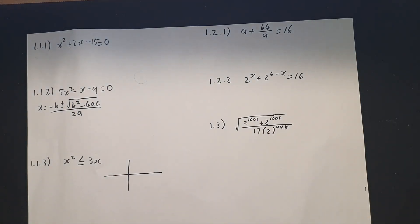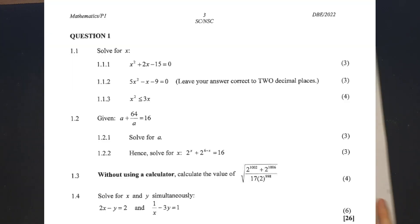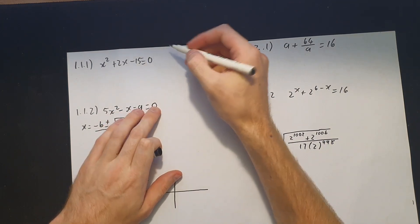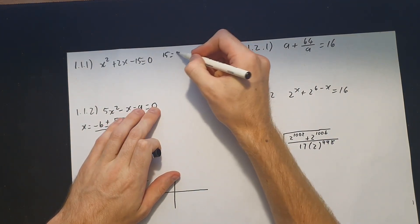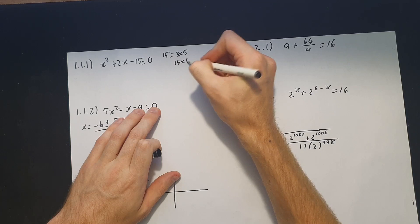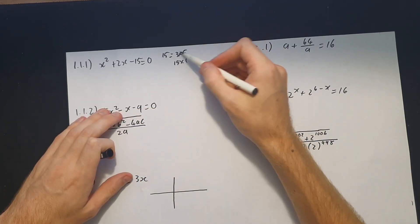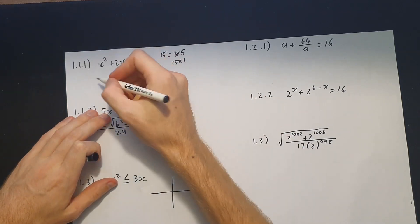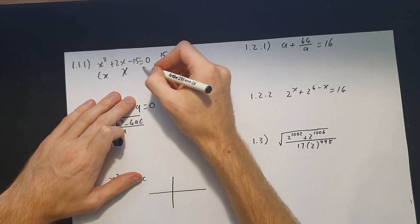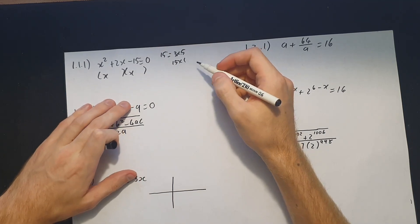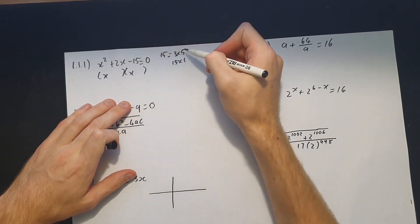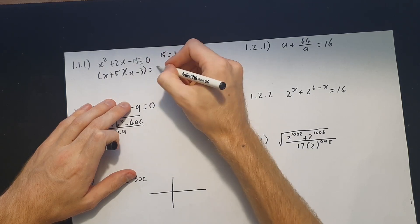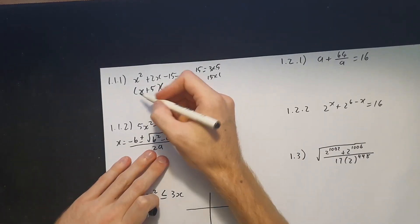Let's have a look at question 1.1.1 — just factorizing. All we have to do is find the factors of 15: 15 equals 3 times 5 or 15 times 1. The combination of 3 and 5 will give me 2, so I know I'm going to have two brackets with x in them. Because this is a positive value, the larger number takes the plus, so it's (x + 5)(x − 3) = 0.